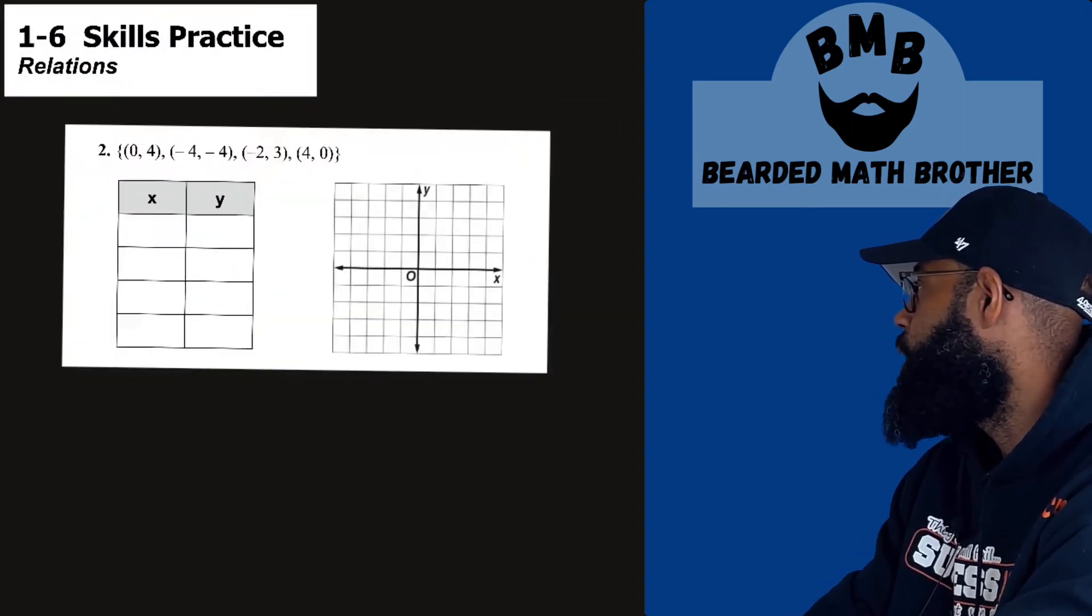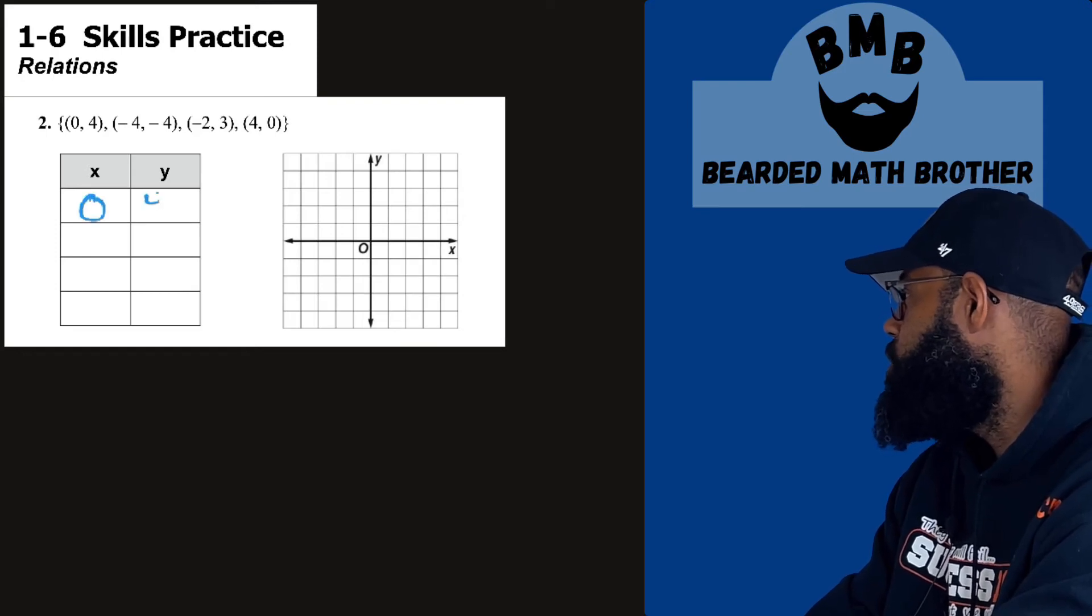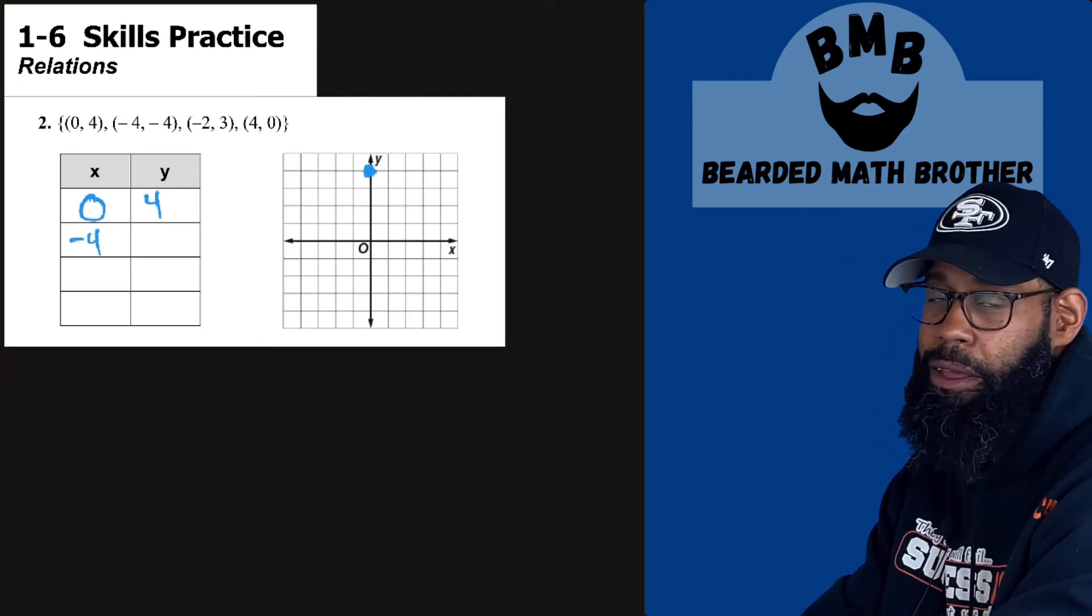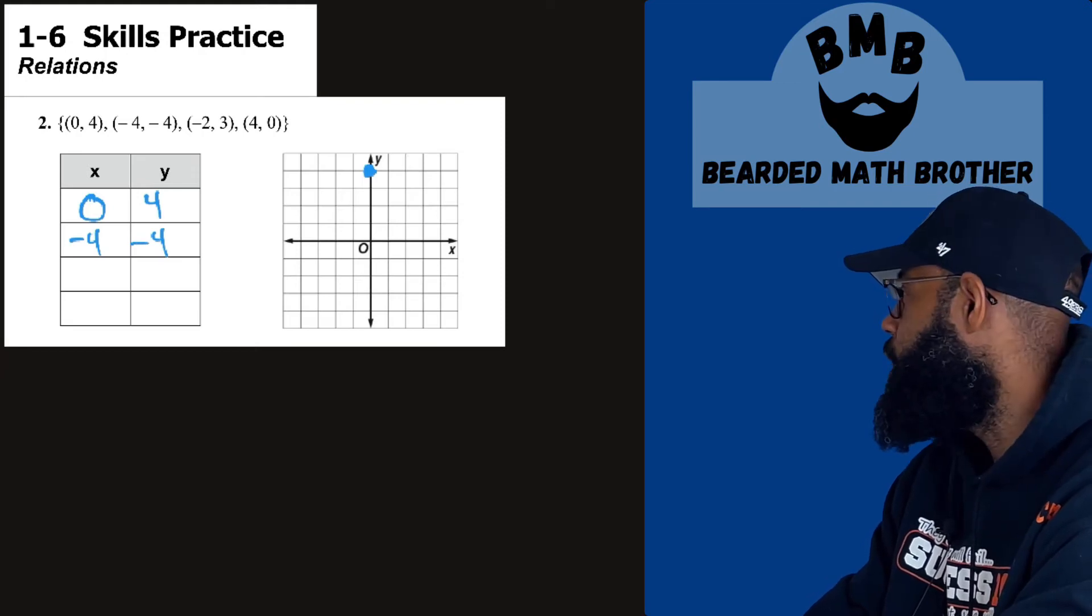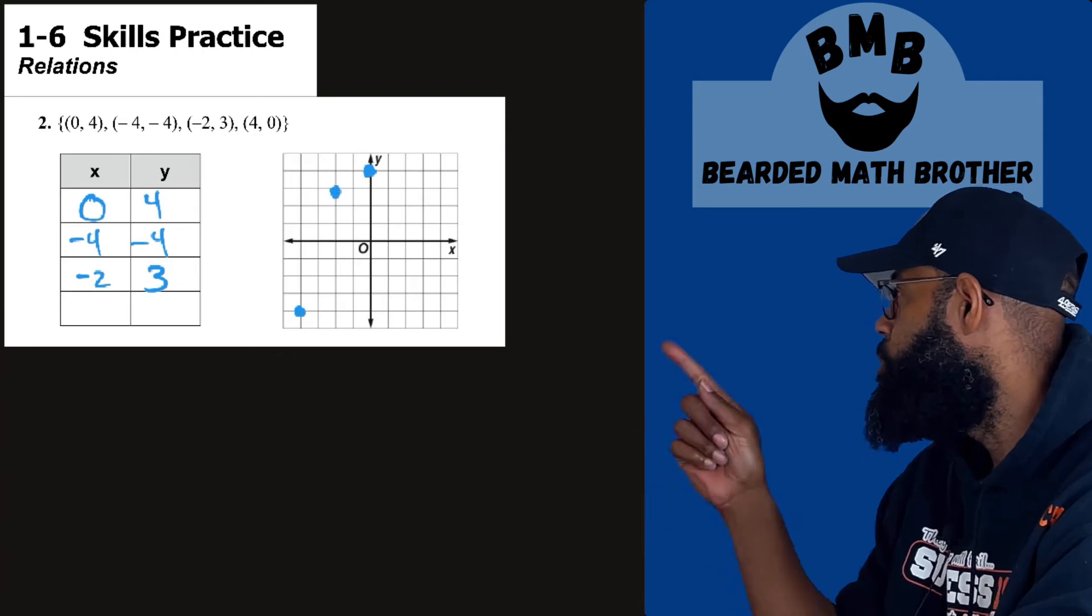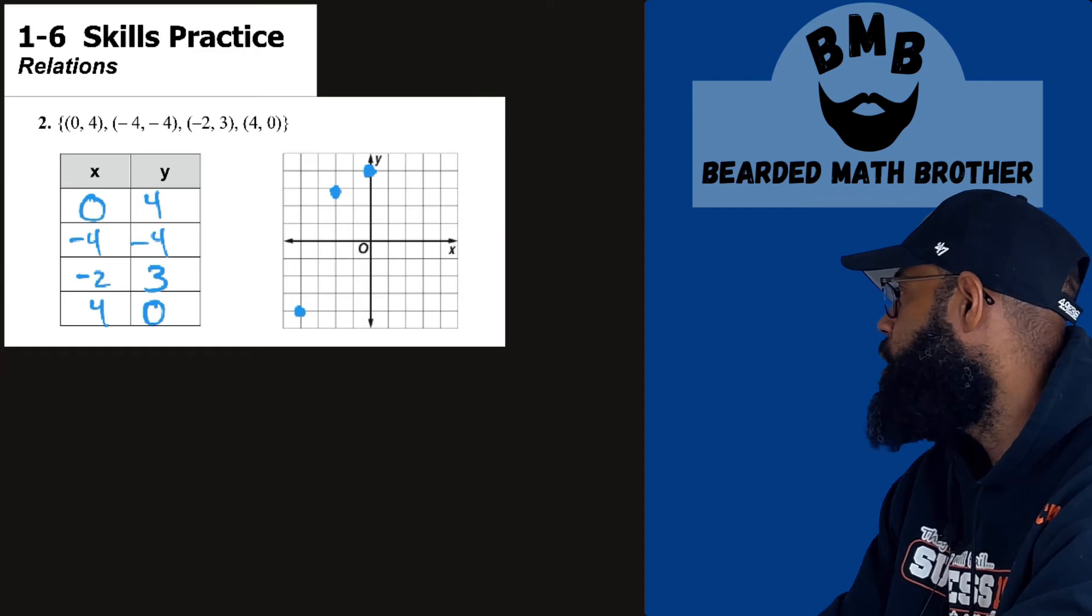Number two. Same thing. And I like it, nice and big. So here we go. My X values, zero, Y value four. All right, one at a time. Next coordinate. Oh, look at that. Write it, plot it. Let's do that again. Write it, negative four negative four. Apply it. Negative four negative four. No. Write it, negative two three. Apply it. Negative two. No, that one. Three. And last one, four zero. Write it, apply it. Four zero. So there we go. We did the first two. We did the table, we did the graph.